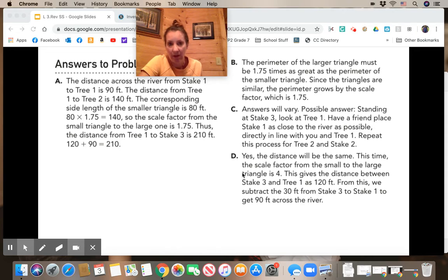For c, it says the answers will vary. They thought one possible answer would be standing at Stake 3, look at Tree 1, have a friend place Stake 1 as close to the river as possible directly in line with you and Tree 1. Repeat this process for Tree 2 and Stake 2. So they thought that's how they did it, Stake 3 being first, then Stake 1, then Stake 2.